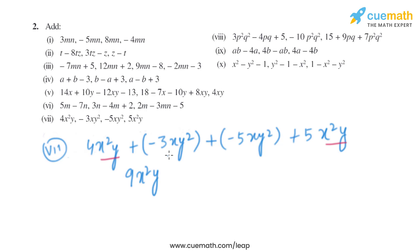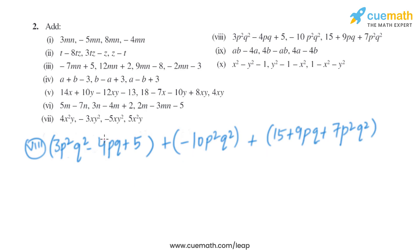And minus 3xy² minus 5xy² gives us minus 8xy². In the eighth part, the expressions are 3p²q² minus 4pq plus 5, minus 10p²q² plus 15 plus 9pq, and plus 7p²q². The p²q² terms: 3p²q² minus 10p²q² gives minus 7p²q².